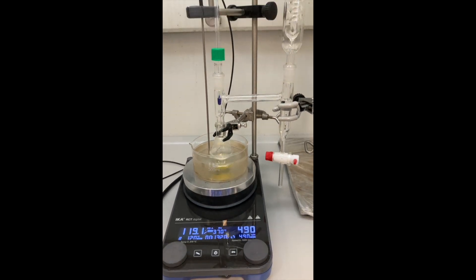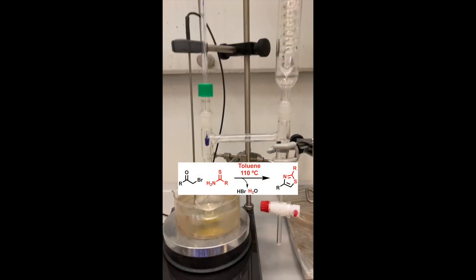I set up a Hantzsch-type reaction. In this transformation, I wanted to unite these two fragments to generate a thiazole ring. To this end, a mixture of the thiamide and the bromoacetone in toluene were refluxed overnight.